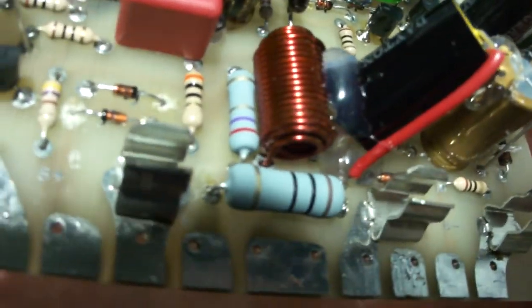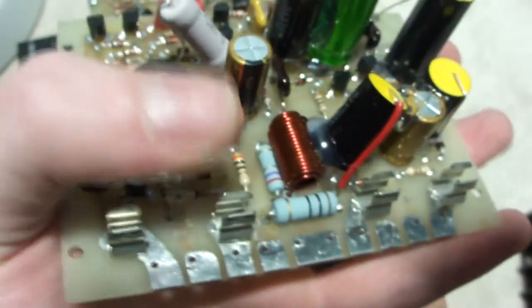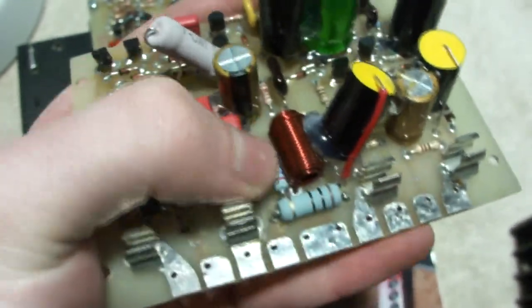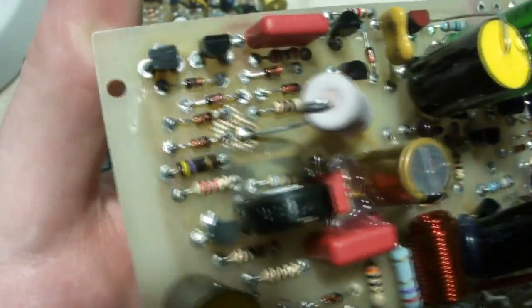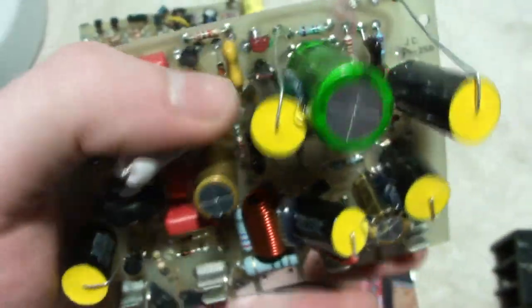Also those two resistors, there and there. These two blue ones were replaced. They didn't need to be, but I decided to do it. I like replacing things just in case, getting some new usage. These are replaced with metal film. That's what you're supposed to do.